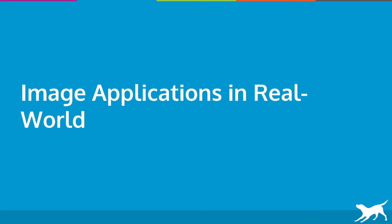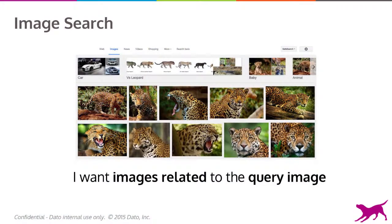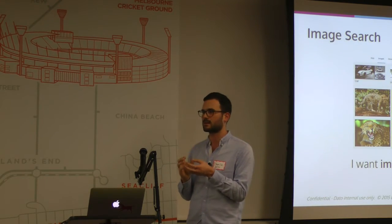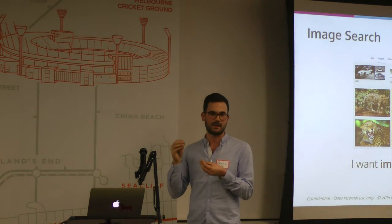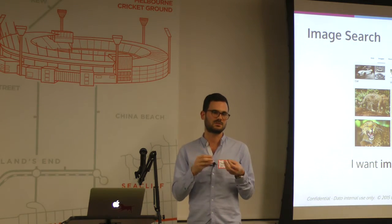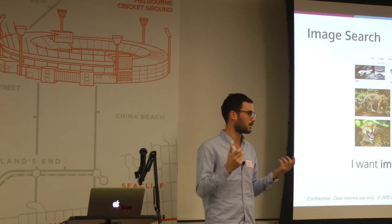Why do we care about image and machine learning? The easiest example is Google Image Search — you put in an image and get back similar images. That may be easy for Google if they have a lot of semantics about images, like labels. But when you don't have labels, which is most image data in the world, that's a much harder problem.